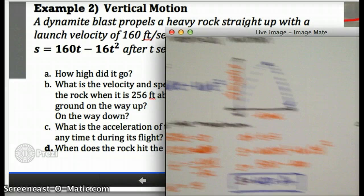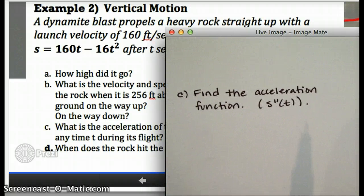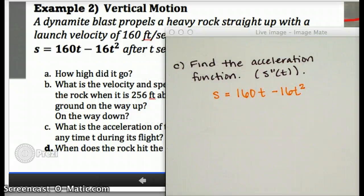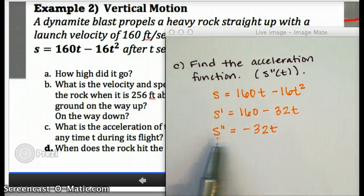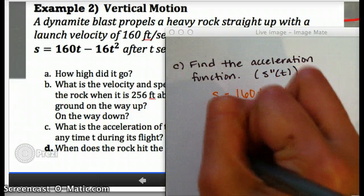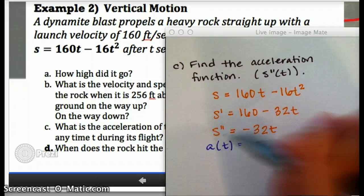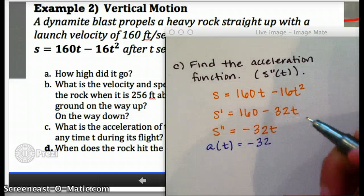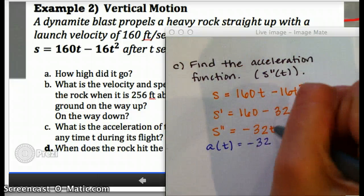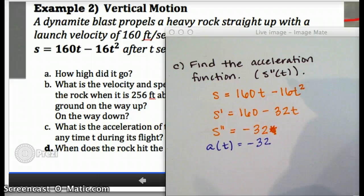So basically if I have to summarize here, in c, we're going to try and find the acceleration function. To do that, I start with the original function, then I take the first derivative, and then the second derivative, and then I'm just going to rename this function using a for acceleration. a of t is the second derivative, which was negative 32, and there should be no t there, it's just negative 32. Now this looks like a number, but it's actually a function, it's just the constant function, and that's the answer to c.